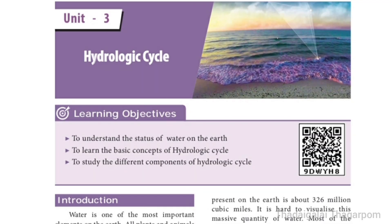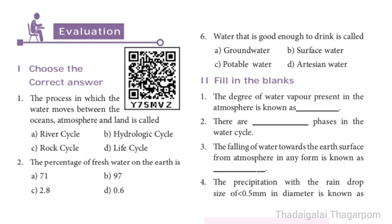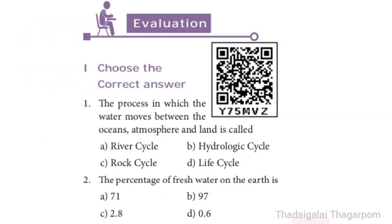8th Standard Social, Geography, Unit 3: Hydrologic Cycle. Book Back Exercise, Roman Number 1: Choose the Correct Answer. 1st one: